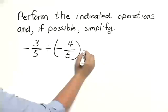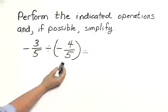To divide, we do multiply. We multiply by the reciprocal of the number we're dividing by.